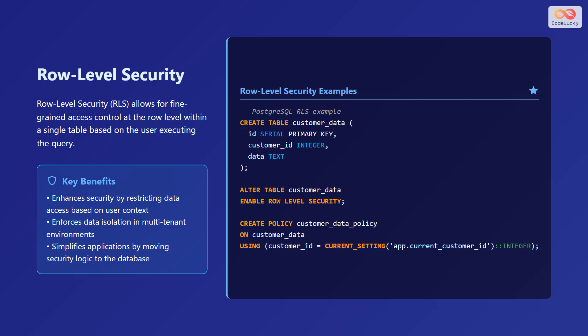Let's discuss row-level security (RLS), which allows fine-grained access control at the row level within a single table based on the user executing the query. Key benefits include: enhancing security by restricting data access based on user context, enforcing data isolation in multi-tenant environments, and simplifying applications by moving security logic to the database. Here is a PostgreSQL example: create a table called customer_data with columns id, customer_id, and data. Then enable row-level security with ALTER TABLE customer_data ENABLE ROW LEVEL SECURITY. Then create a policy on the customer_data table using customer_id equals the current setting.